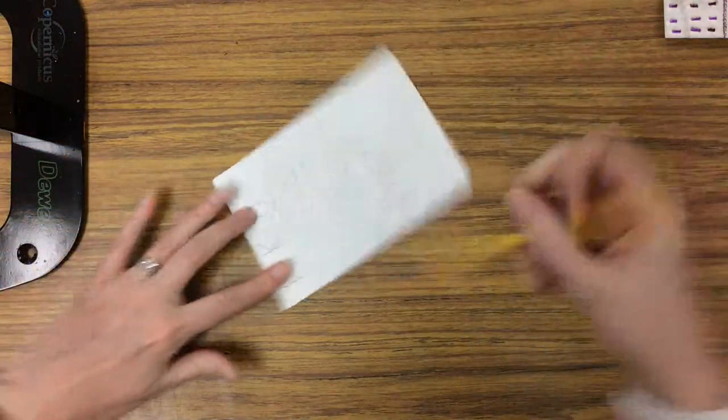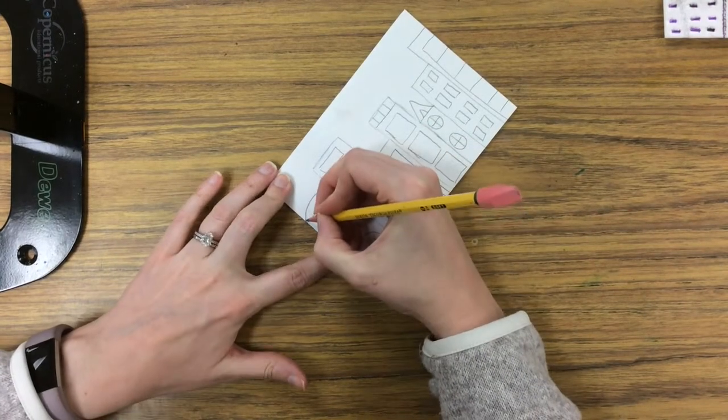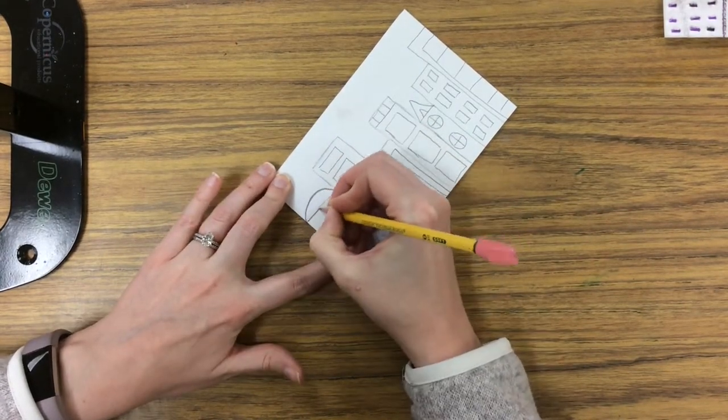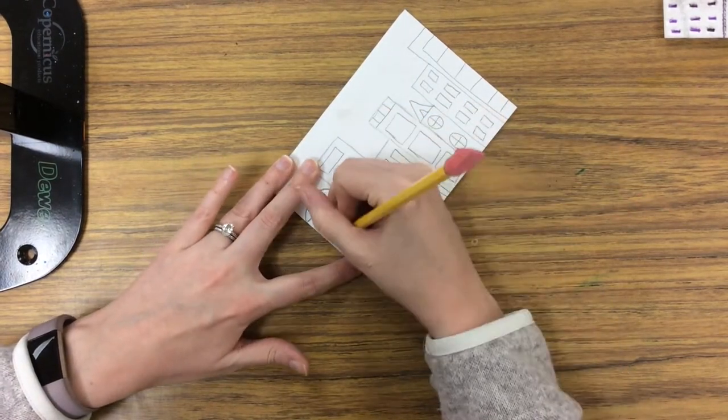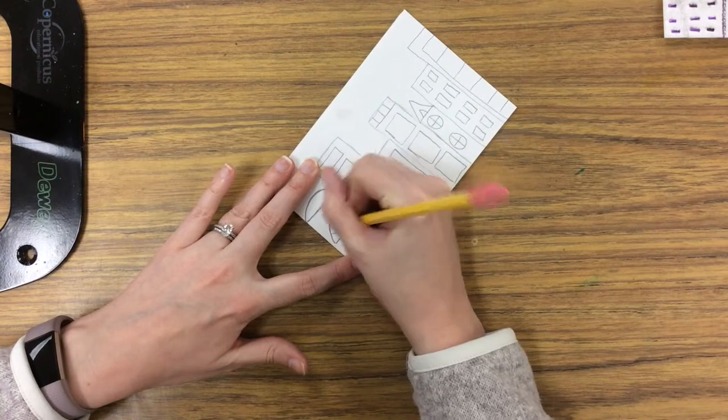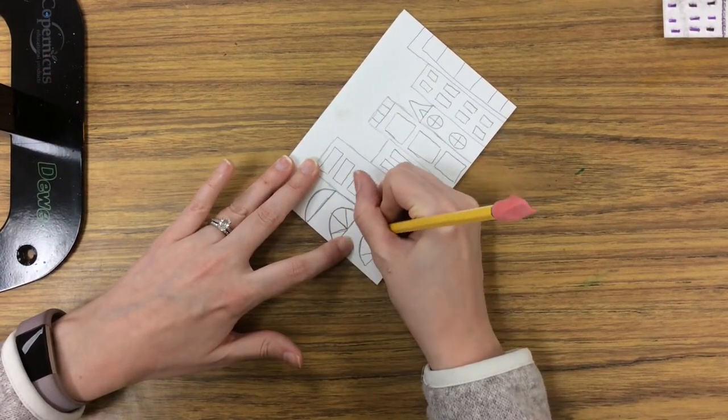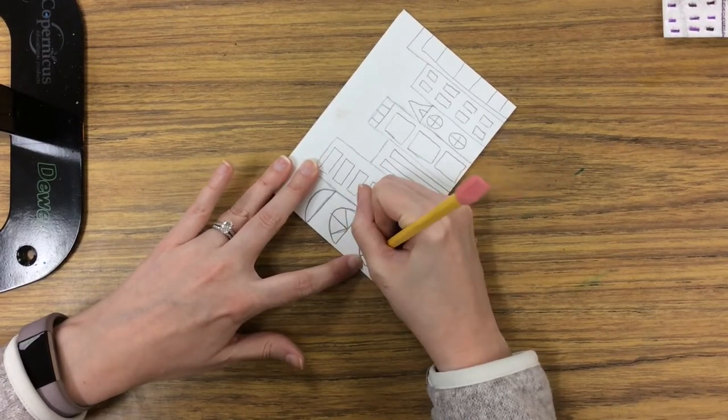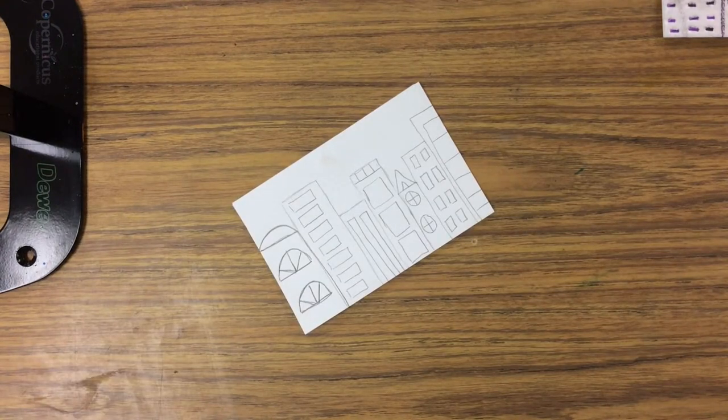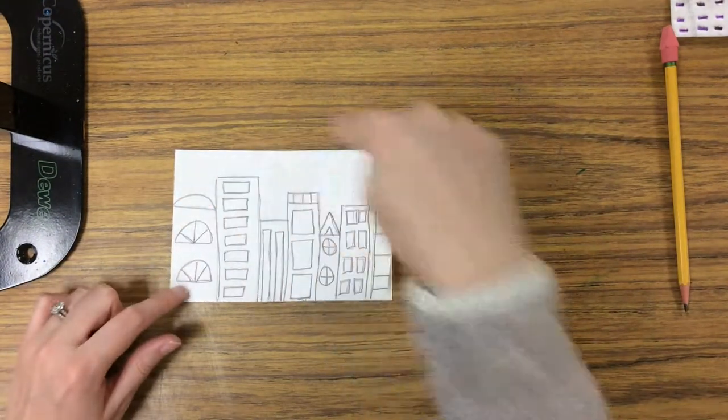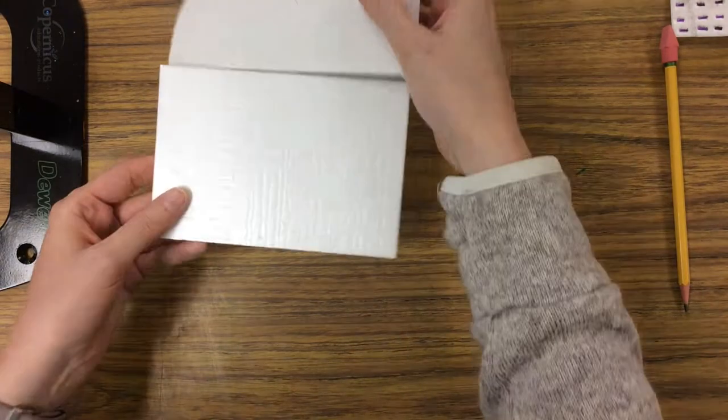Now with the styrofoam underneath, I'll take my pencil and trace over all of my lines. You just need medium pressure, you don't have to press super hard, and that is going to press my design into the styrofoam underneath. I'm going to do all this in pencil and we'll skip ahead.